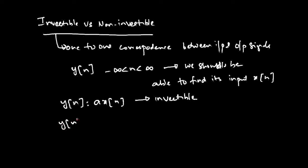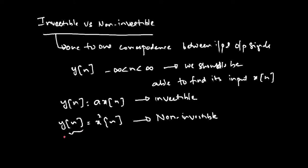On the other hand, if you have a system like y of n equals x squared of n, this is a non-invertible system. It is non-invertible because even if you know y of n — say y of n takes a value of 4 — x of n can be either 2 or minus 2. There is uncertainty in the value of x of n given y of n, so you cannot exactly find x of n, and hence this system is said to be non-invertible.